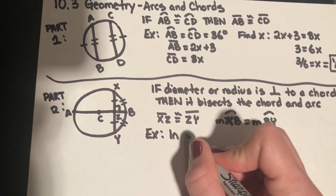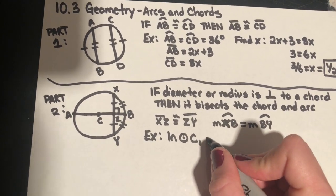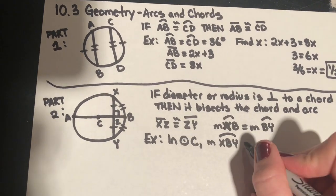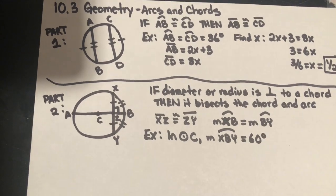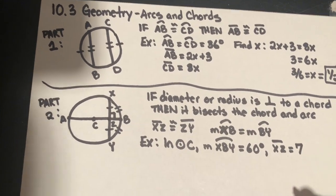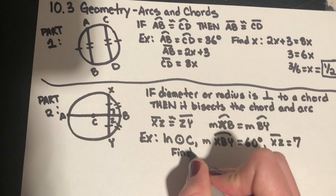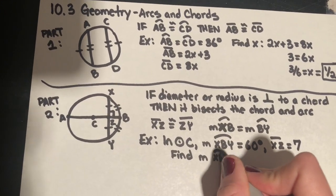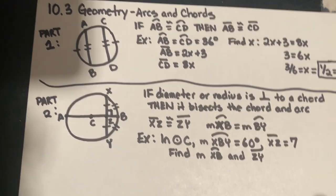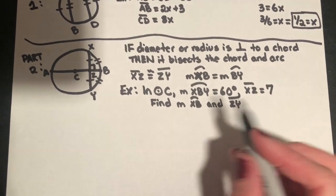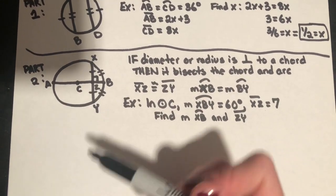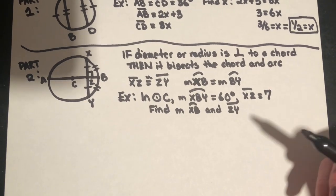Looking at an example: in circle C, I'm going to give you the measure of arc XBY equals 60 degrees. I'm also going to give you that XZ equals 7, and I want you to find the measure of arc XB and ZY. If you're taking notes, pause the video, take in what you're looking at and what you're trying to find, then come back to watch my solution.